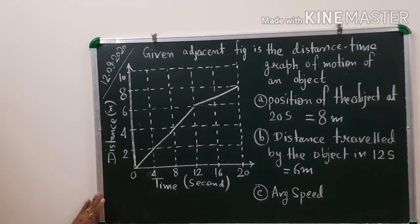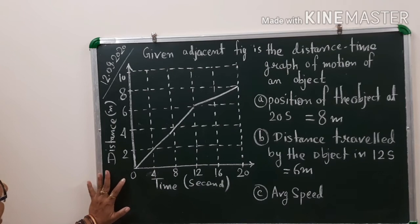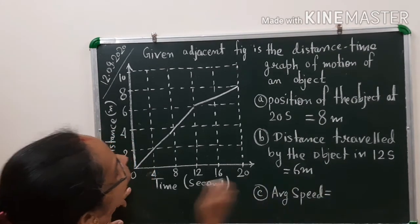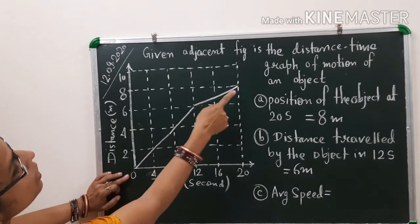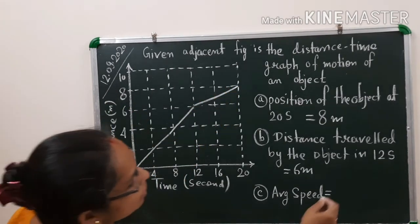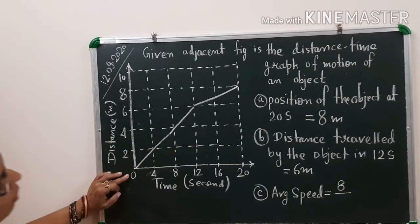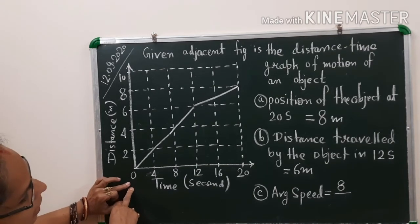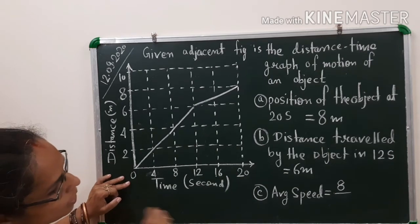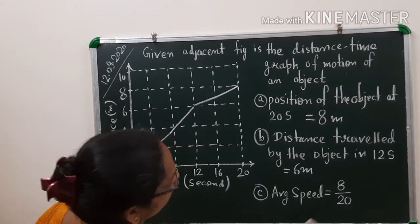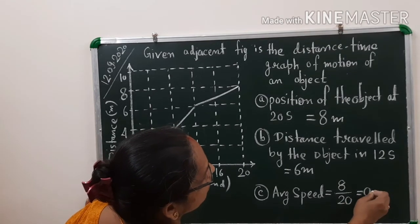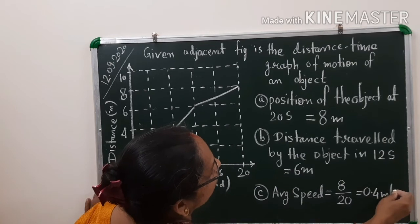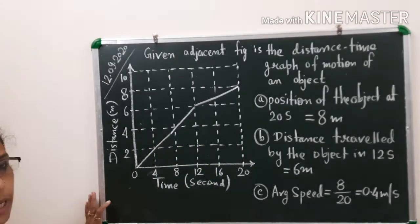The last part is average speed. As found earlier, average speed equals total distance divided by total time. The total distance covered is 8 meters — from 0 at the beginning to 8 at the end of the journey. The total time taken is 20 seconds. So average speed is 8 divided by 20, which equals 0.4 meters per second. Remember to always write the unit or the answer will be incomplete.